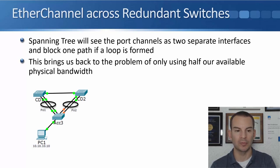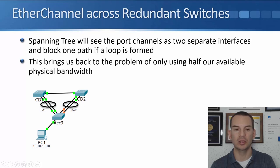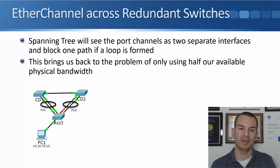The problem is that spanning tree sees those separate port channels as two separate interfaces, and it will block one path if a loop is formed. In our example, CD1 is the root bridge, so the port channel from Access 3 to CD1 is forwarding, but the port channel going up to CD2 forms a potential loop, so spanning tree blocks it. With four physical interfaces configured as uplinks, only two of them are forwarding, so we're only getting half of the possible bandwidth.